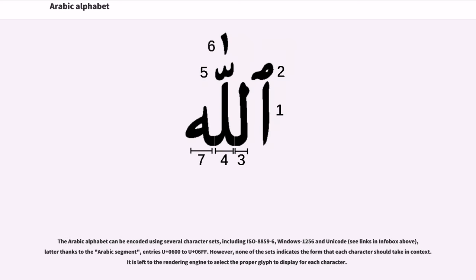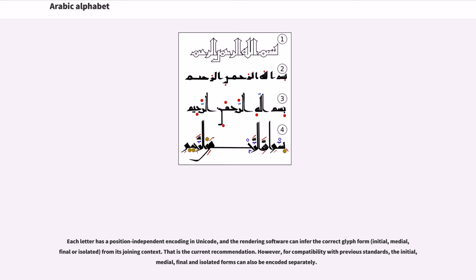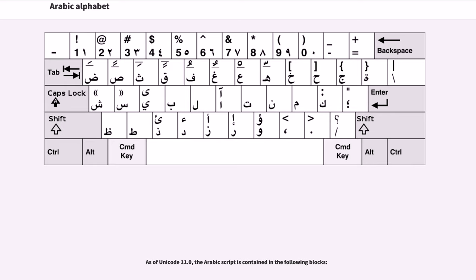The Arabic alphabet can be encoded using several character sets, including ISO 8859-6, Windows-1256, and Unicode, via the Arabic segment entries U+0600 to U+06FF. However, none of the sets indicates the form that each character should take in context; it is left to the rendering engine to select the proper glyph to display for each character. Each letter has a position-independent encoding in Unicode, and the rendering software can infer the correct glyph form — initial, medial, final, or isolated — from its joining context. However, for compatibility with previous standards, the initial, medial, final, and isolated forms can also be encoded separately. As of Unicode 11.0, the Arabic script is contained in several blocks.